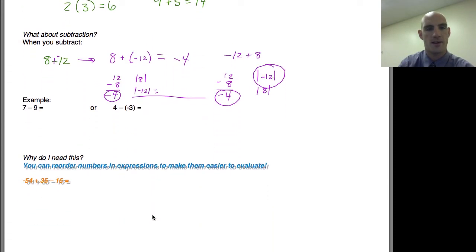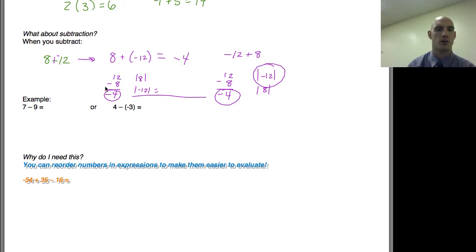Let's look at a couple of examples and see how it works. 7-9. Like we did up top, we're going to make this into an addition problem. So it's going to be 7+(-9). And so then I can reorder it. If I think about this, it's going to be 9-7 is 2, and 9 is the bigger absolute value. So my answer is going to be -2. And -9+7 is going to give me also -2. So the order doesn't matter.